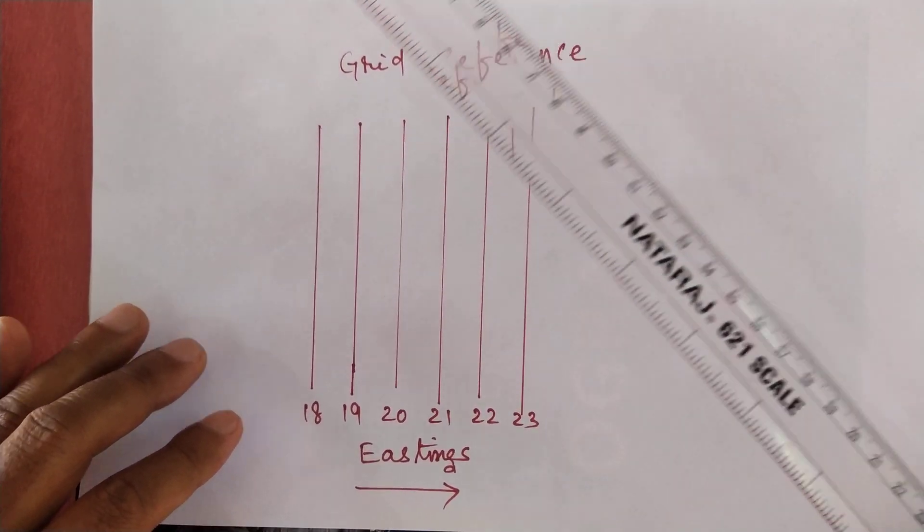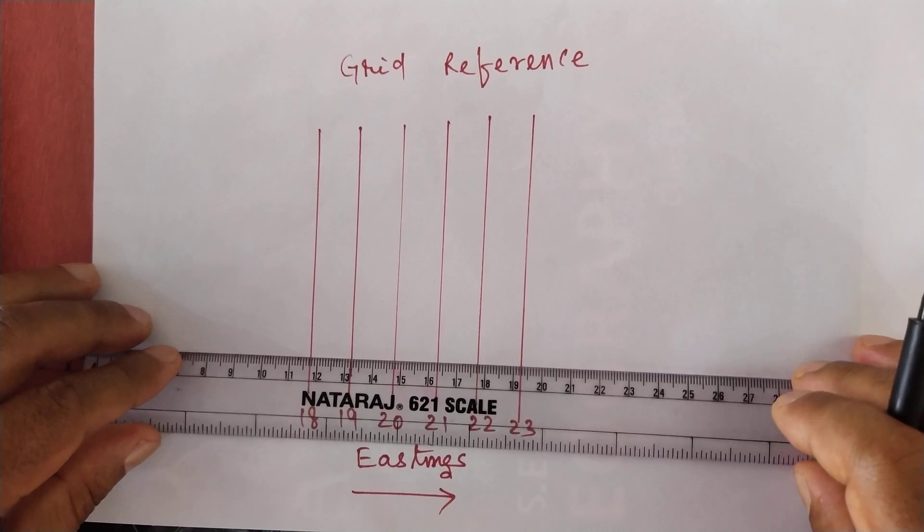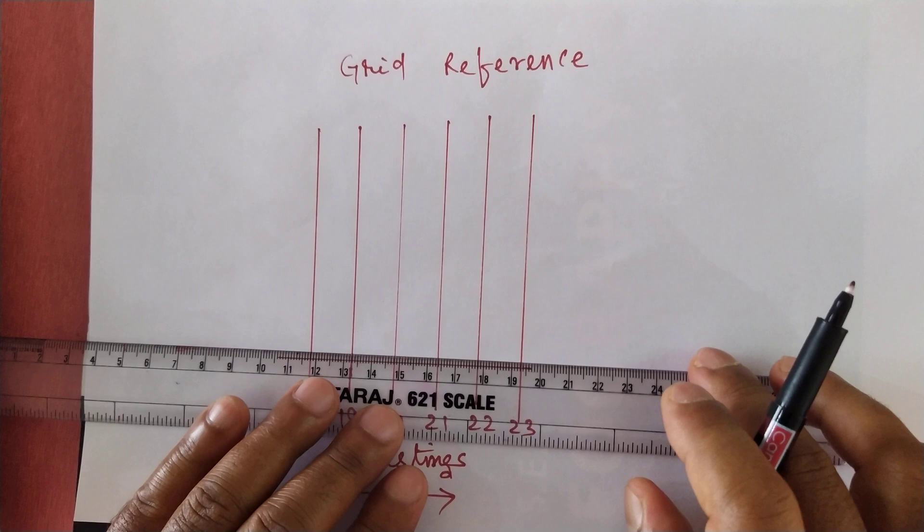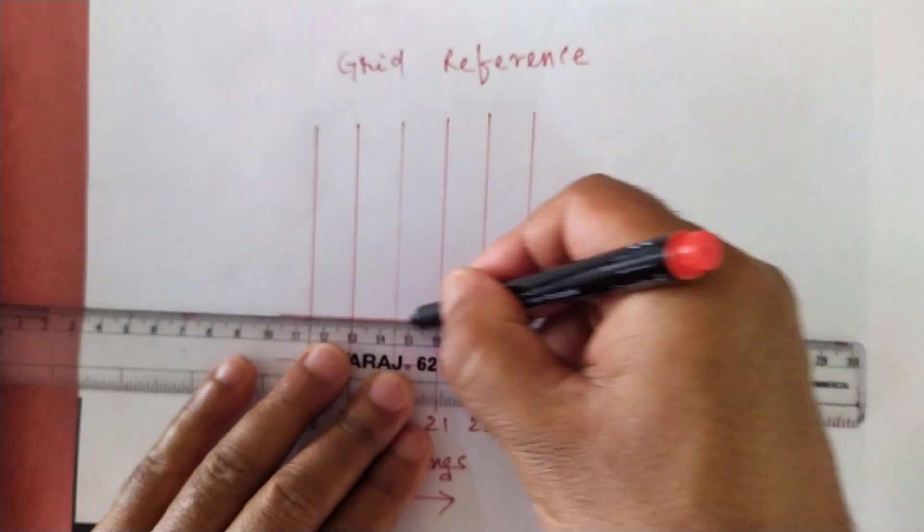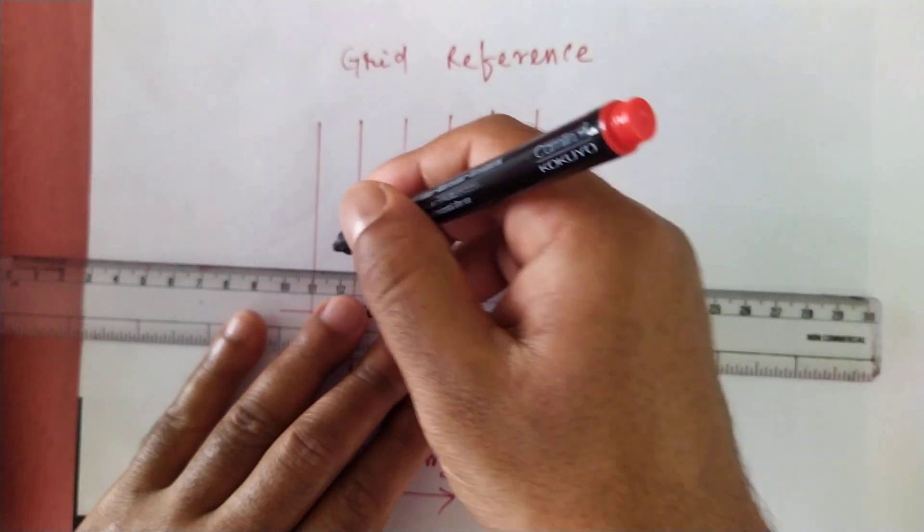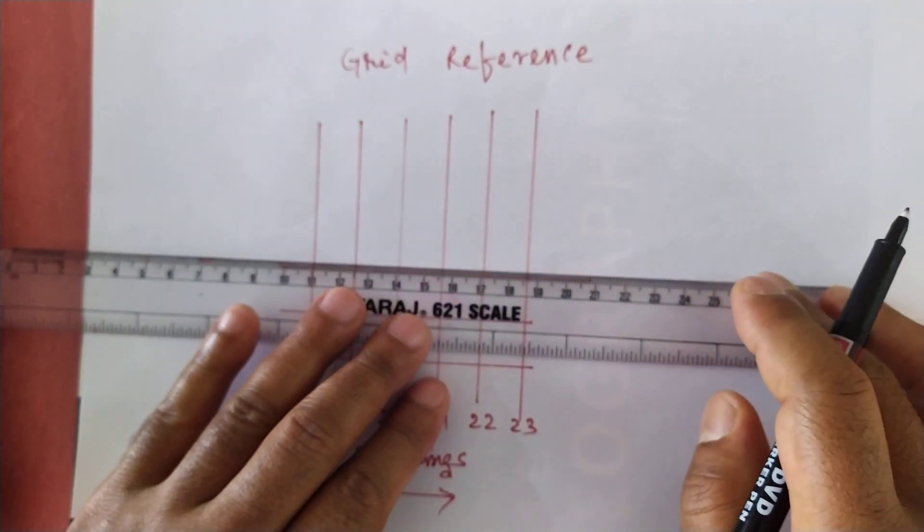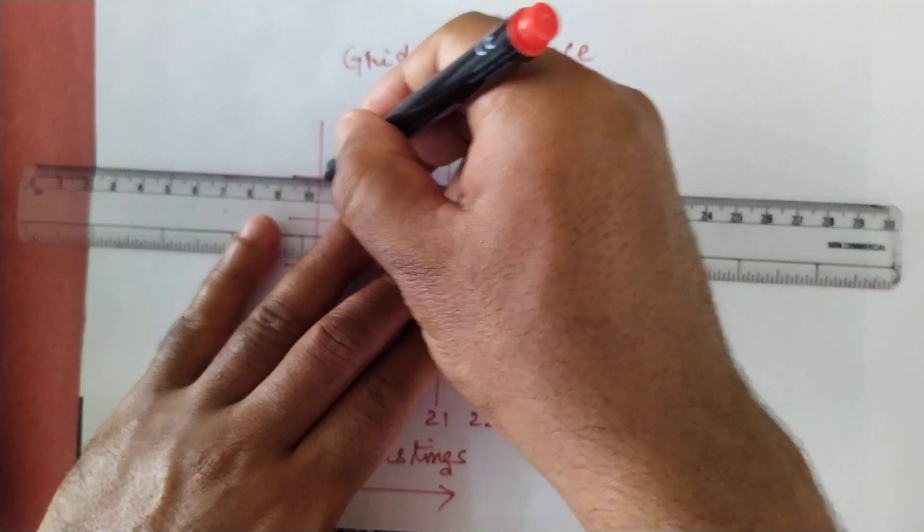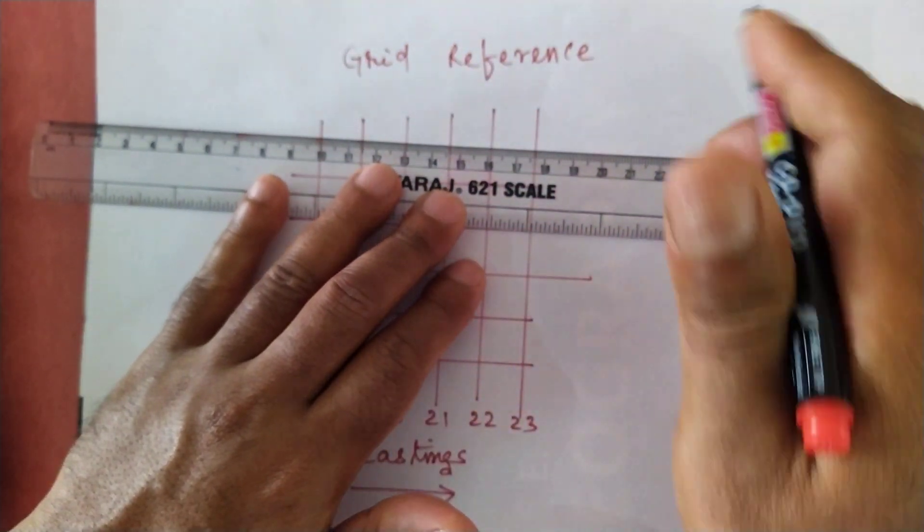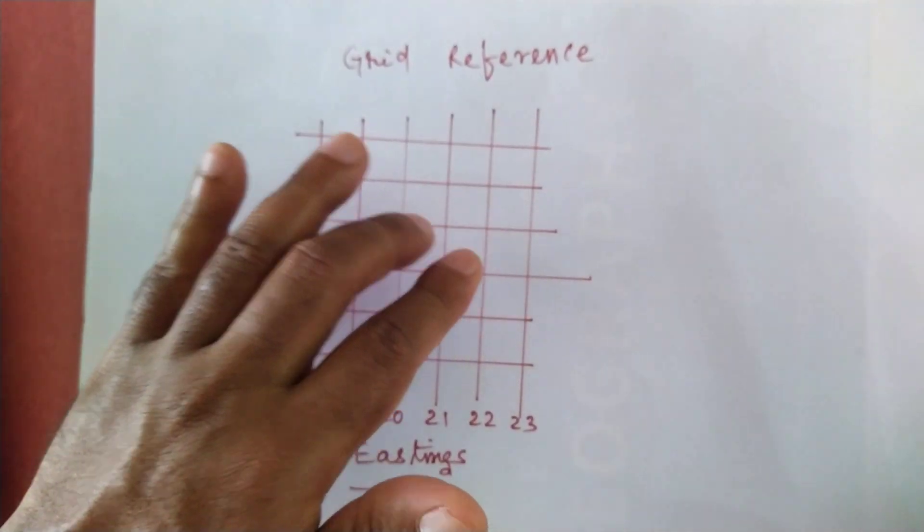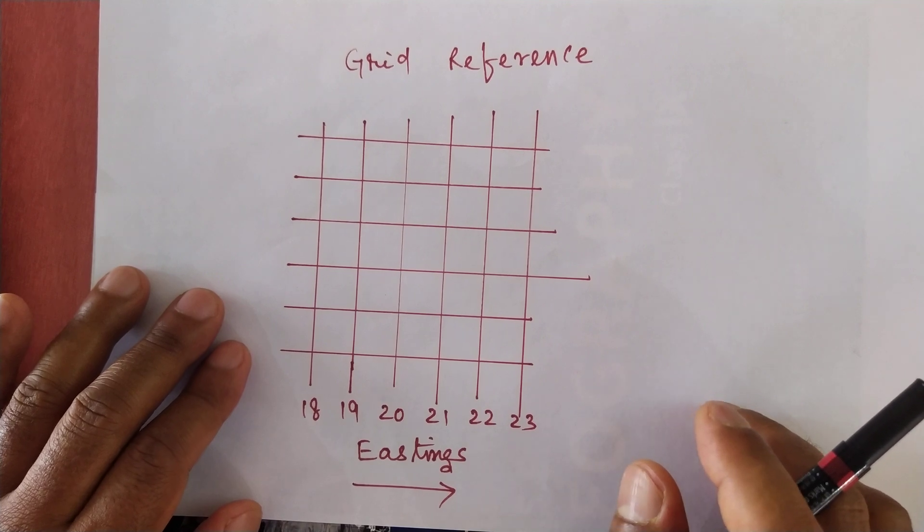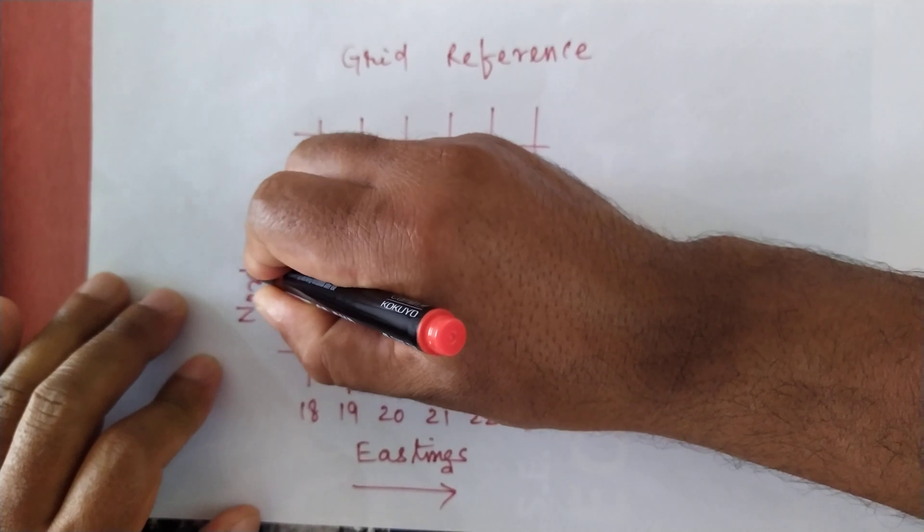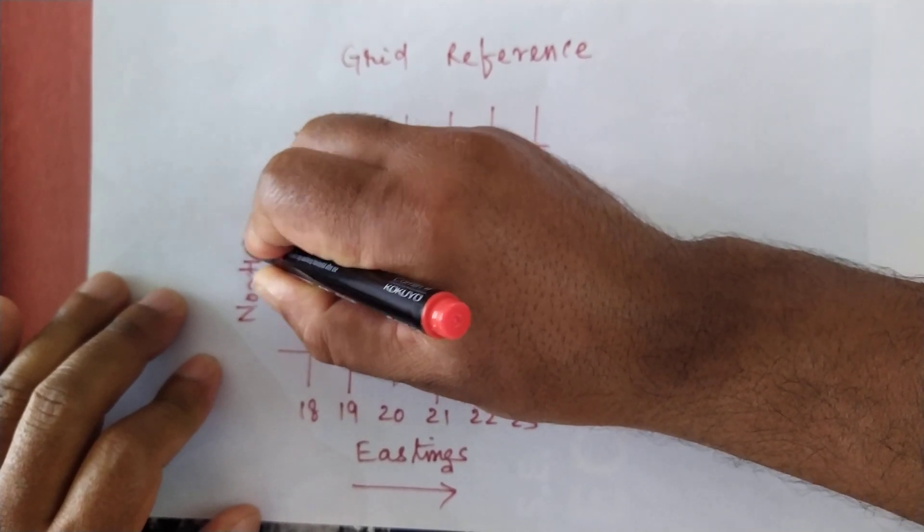They will be called as Eastings, and the lines which are drawn horizontally on the top of map are known as Northings. They will be running East to West.